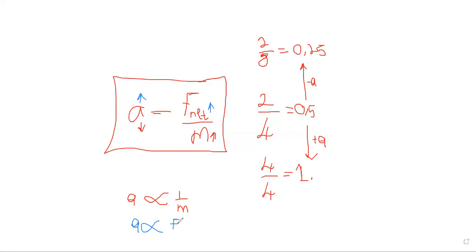Whenever they're going to ask you — they'll usually ask you to state the mathematical relationship between two things. If you can't write it in numbers, you just have to write either one of these two statements: whether those two things are directly or inversely proportional. So that's basically it.